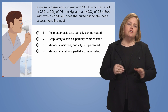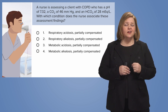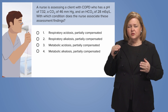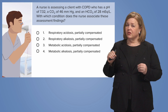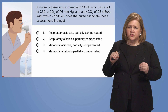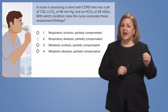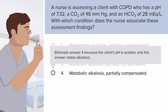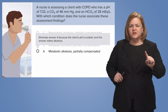When you're looking at some type of imbalance, you can only be one of those four things. pH is the one that determines if I'm acidotic or alkalotic. A pH of 7.32 is below normal, so it's considered acidotic. I can get rid of option two — that's alkalosis — and option four, which is metabolic alkalosis. Just like that, we're down to two answers.